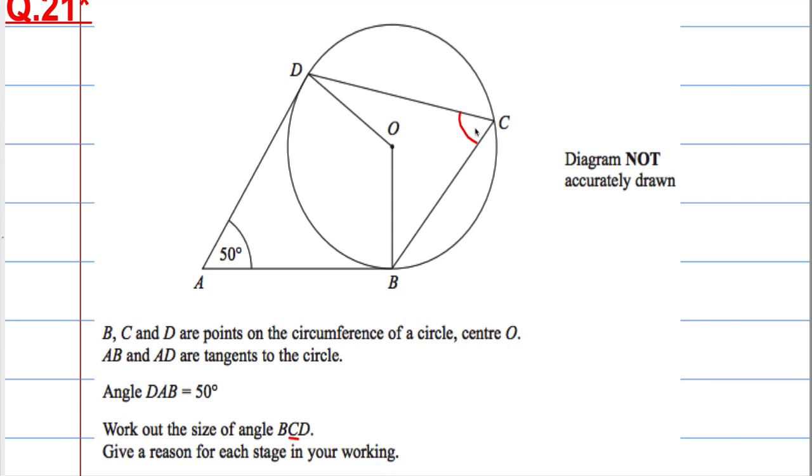Work out that angle and give a reason for each stage in the working. I'm going to try and work it backwards here now. So if I want this, I know there's a relationship between the red angle and the blue angle, because the angle at the circumference of a circle is twice the angle at the centre. So there is a relationship between these two. If I have the blue angle and divide it by 2, that will give me the red angle.